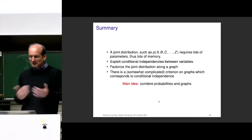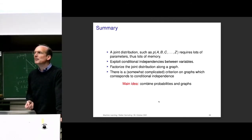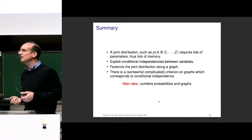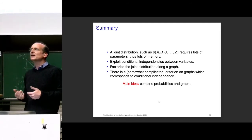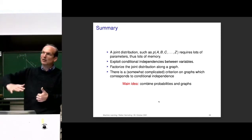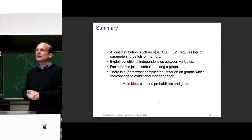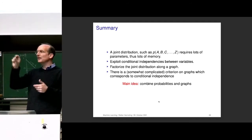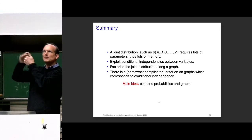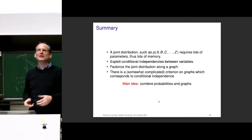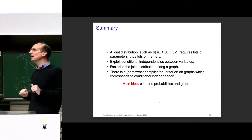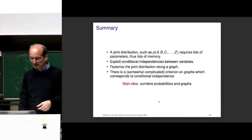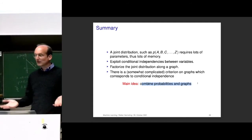We've seen that a joint distribution can be very efficiently represented using graphs, exploiting conditional independencies between variables. It's also a good way to think about distributions if you have domain knowledge — drawing the graph simplifies and reduces the complexity of your probability distribution. As computer scientists we're happy because we can sample along the graph: each node is like an object with some input, and once you get the input you can trigger some output and pass it on to your children. The main idea is to combine probabilities and graphs.